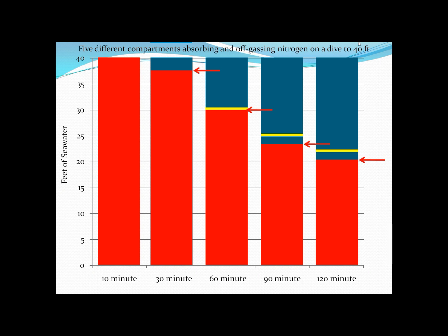The rate at which a tissue compartment will absorb and release gas is its half time, but also the bigger the difference between the surrounding pressure and the pressure it's at, the faster it's going to move. So we naturally expect that 10-minute compartment — with a 40 feet of seawater nitrogen difference — to move a lot faster than the 120-minute compartment, which only has a 20 feet of seawater nitrogen difference. Combined with the 10-minute compartment being inherently faster, there are two reasons we see a significant difference in the speed at which nitrogen levels reduce.